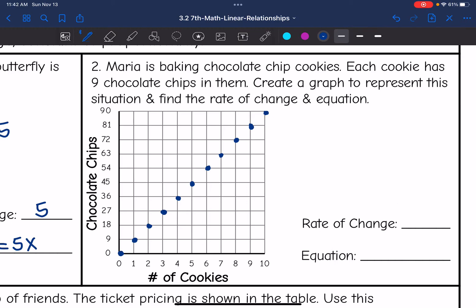So now that I've graphed this, I can choose an ordered pair. I'm just going to use this first ordered pair right here of 1, 9.